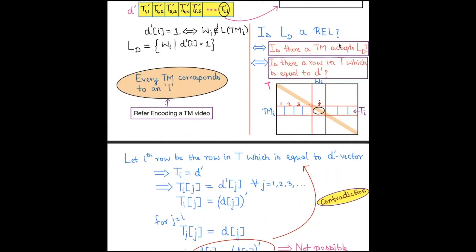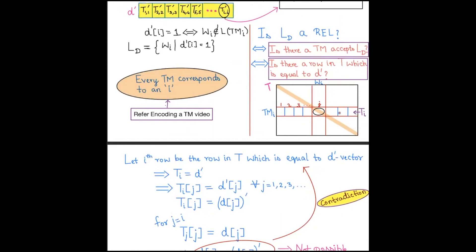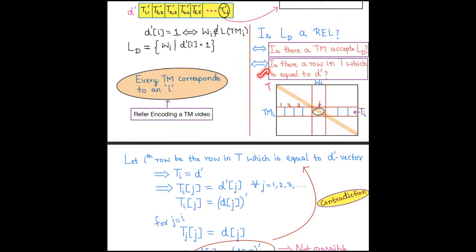There is no row in T that equals vector D'. D' is constructed by complementing all diagonal elements of T, so every row will differ from D' in at least one element — the diagonal position. Backtracking: since the assumption is false, there is no Turing machine that accepts L_D. Therefore L_D is not a recursively enumerable language. Our final conclusion is that there will never be a Turing machine existing for the diagonalization language.